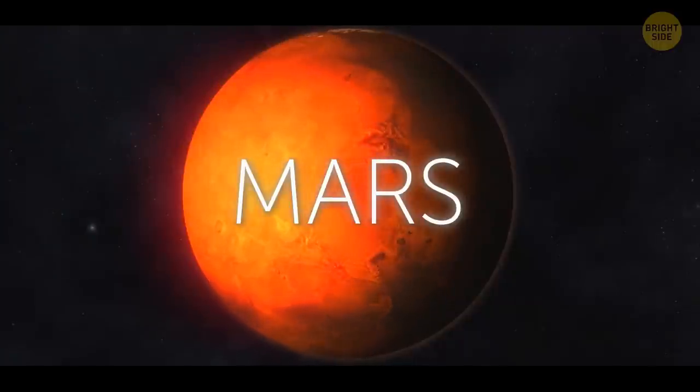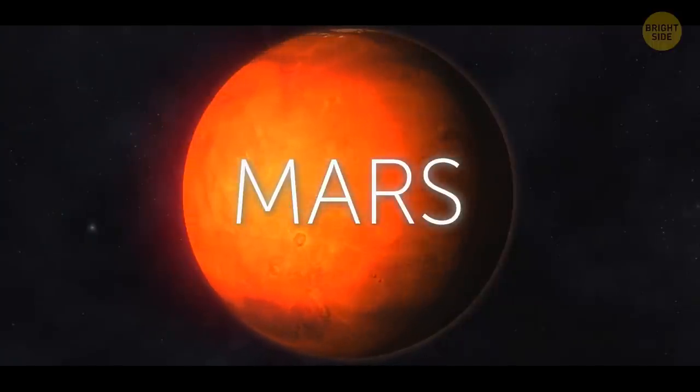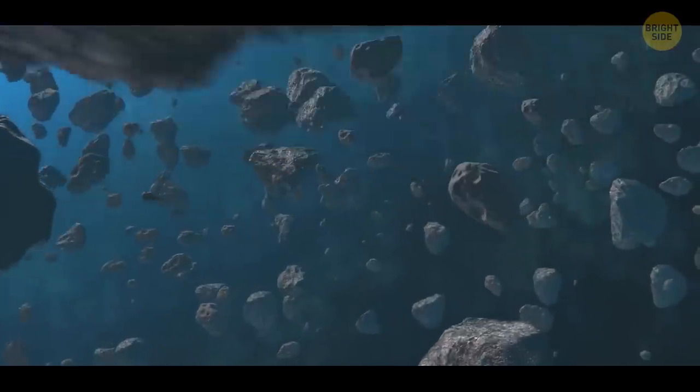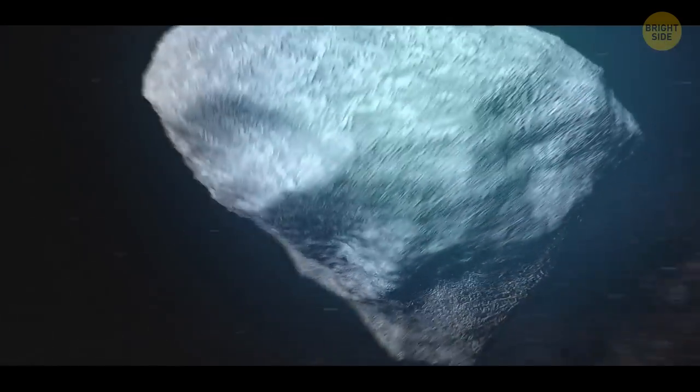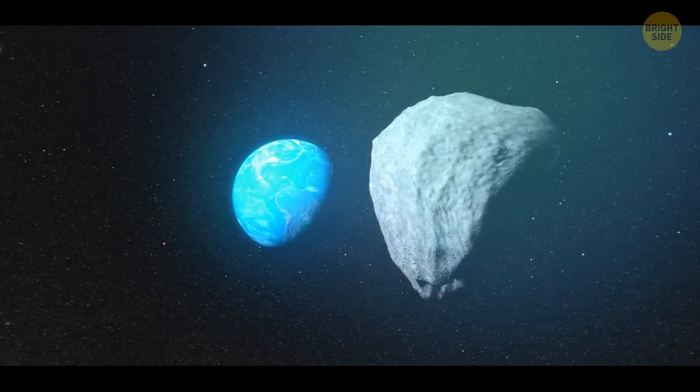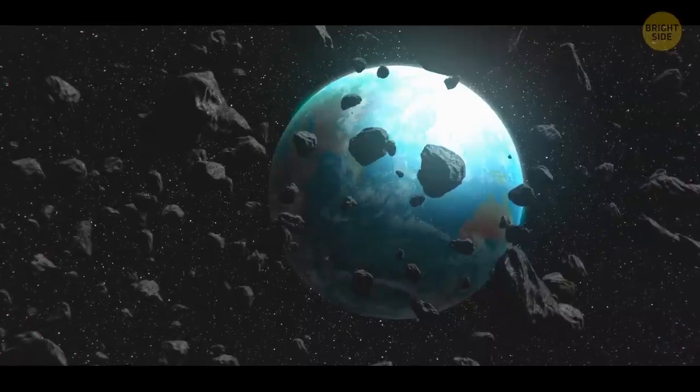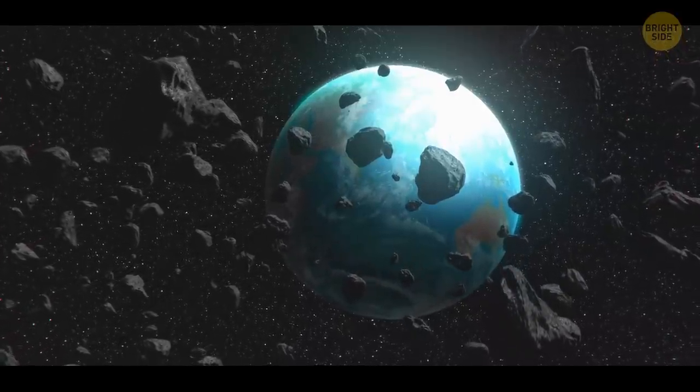Life without Mars might even be good for the Earth. There's an asteroid belt between Mars and Jupiter. Mars' gravity can grab an asteroid from the belt, spin it around, and catapult it toward us. Without Mars, the asteroids would stay in place thanks to Jupiter's gravity.